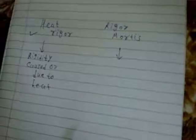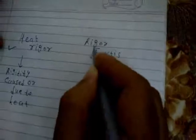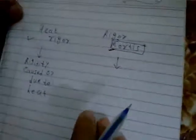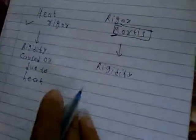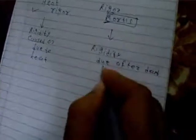Now we are going to learn what is rigor mortis. You have all heard the word postmortem — when someone dies, a specialized doctor performs the postmortem. The word 'mortis' relates to death. So rigor mortis is the rigidity that occurs after death. Heat rigor is rigidity due to heat; rigor mortis is rigidity after death. This is the key difference between the two.